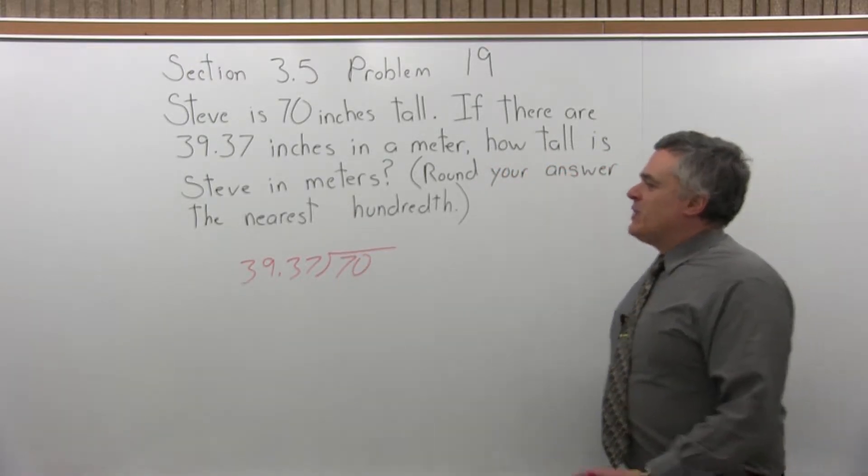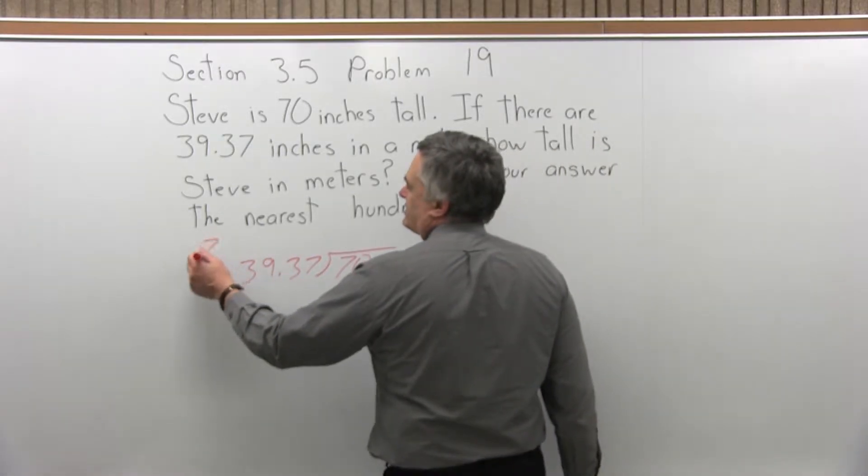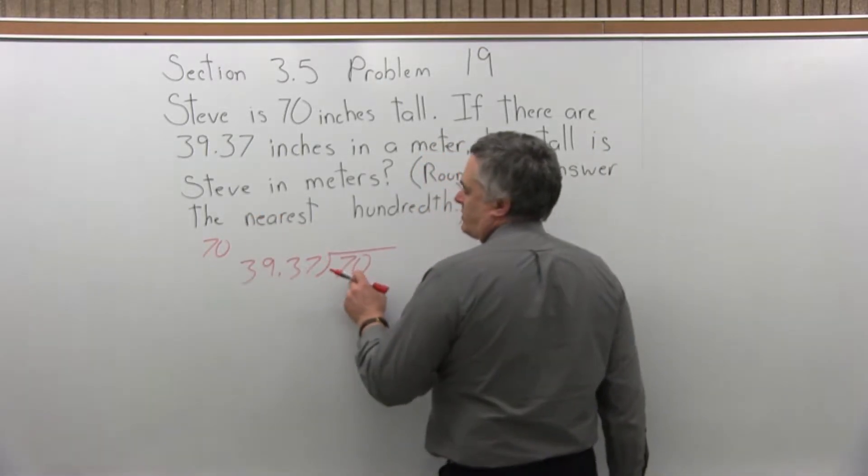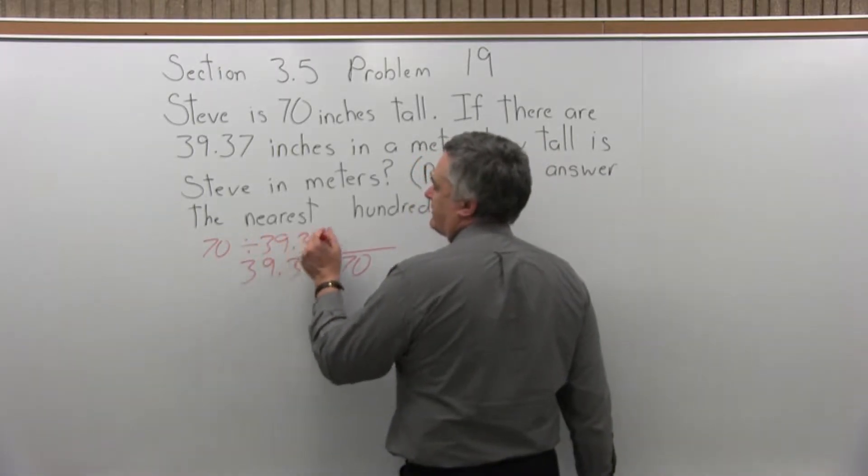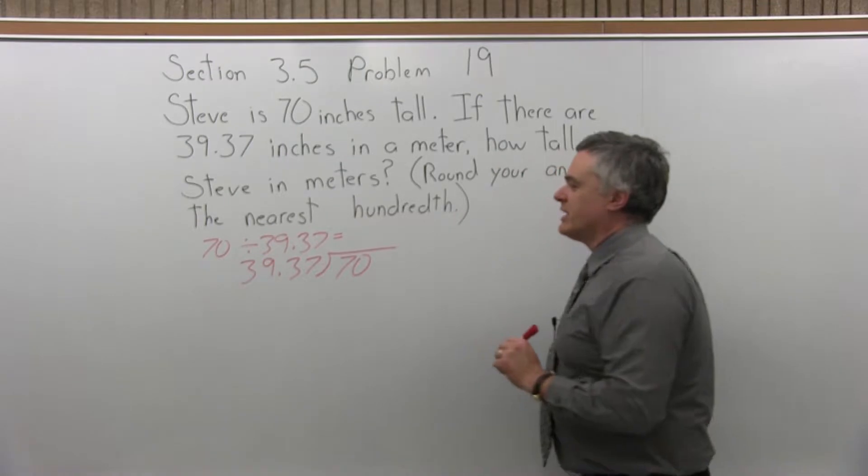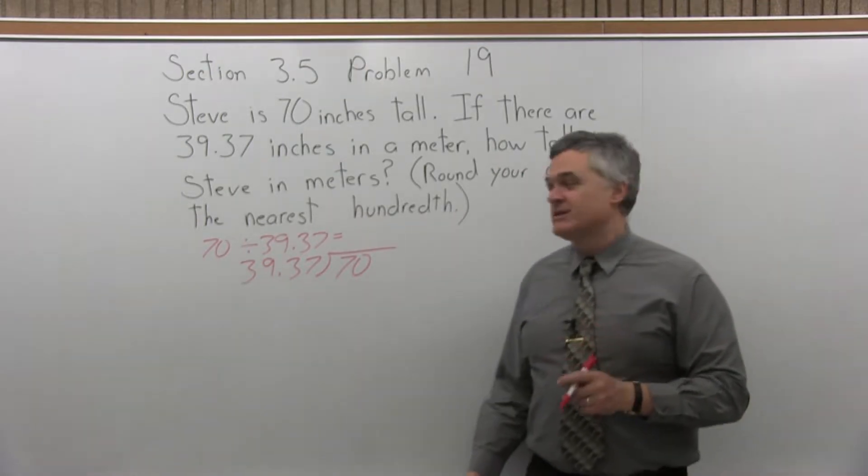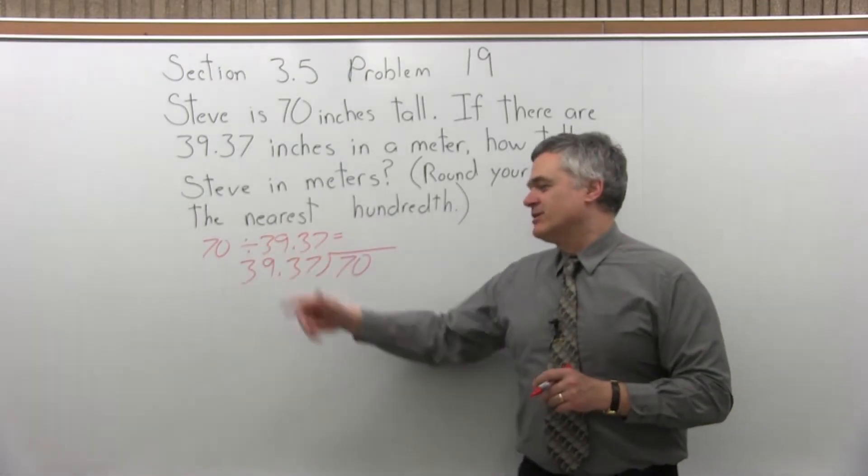Now if you had a calculator, the way you would write this is you enter the 70 first, which you call the dividend, then divide by 39.37. So if you're curious at the end of the problem, you want to get your own height in meters, and you can use a calculator, you'd enter it that way.